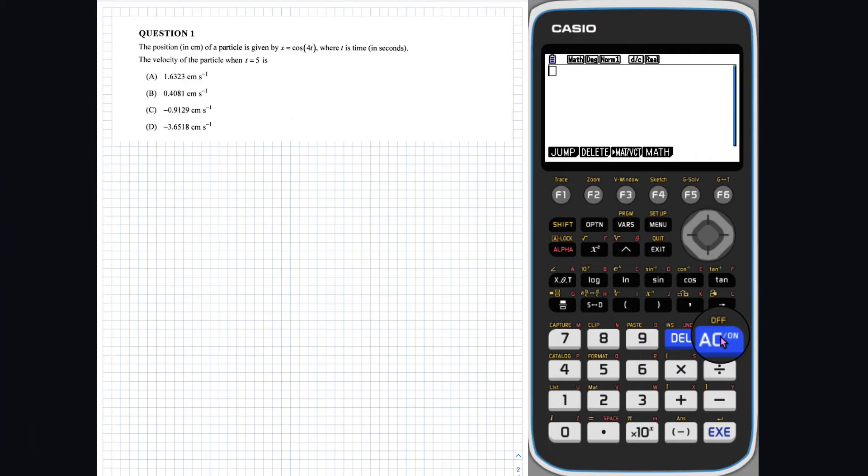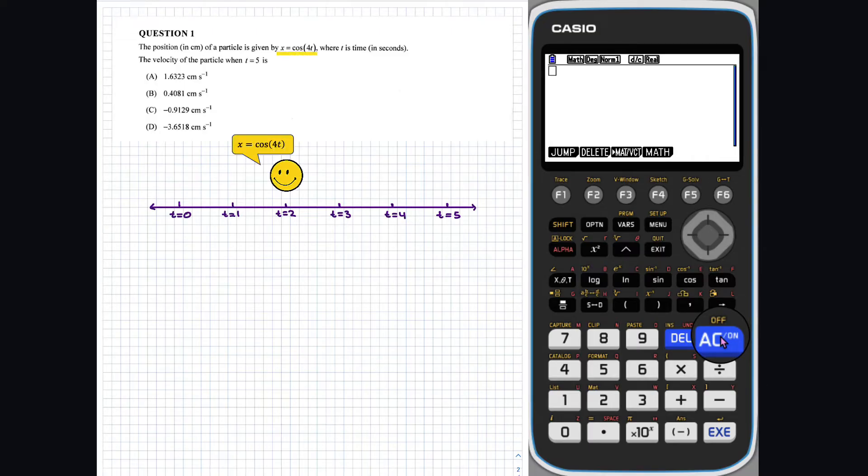Question 1. The position of a particle, a particularly happy particle, is given by x equals cos of 4t, where time is measured in seconds.